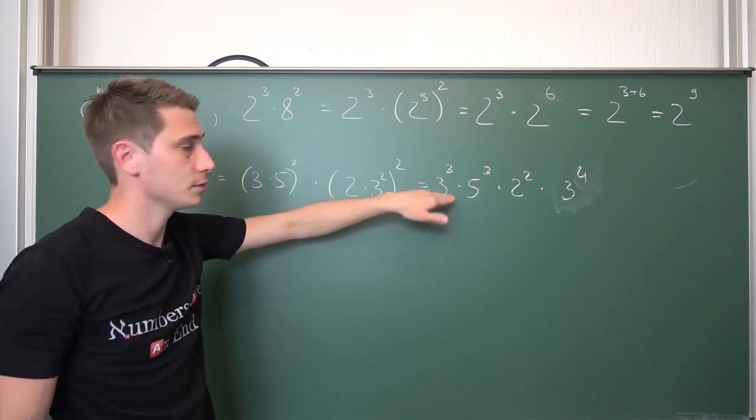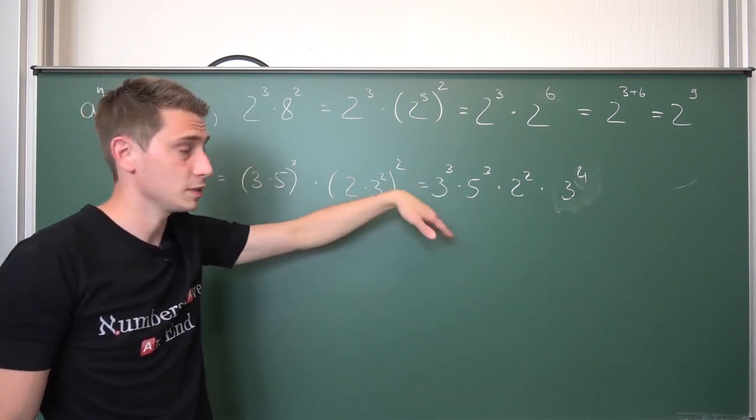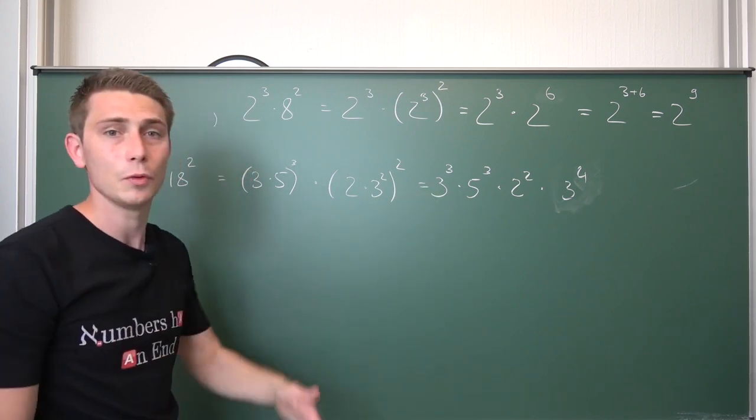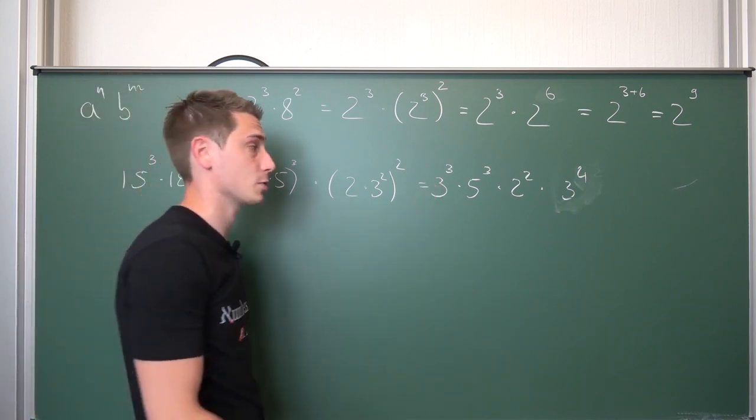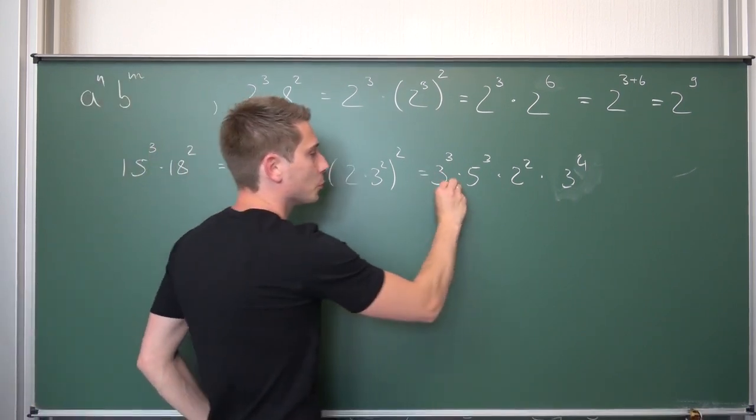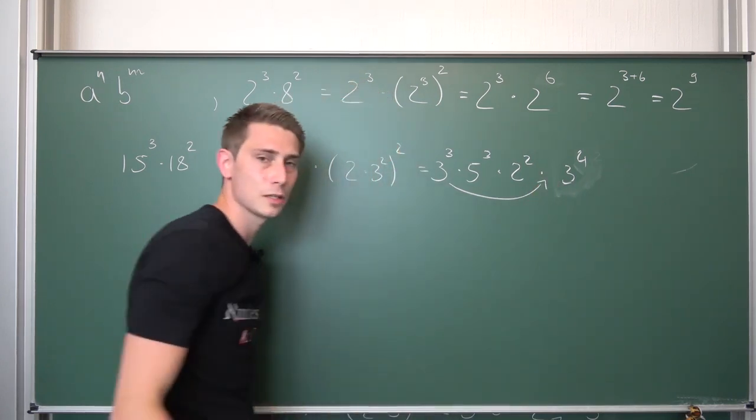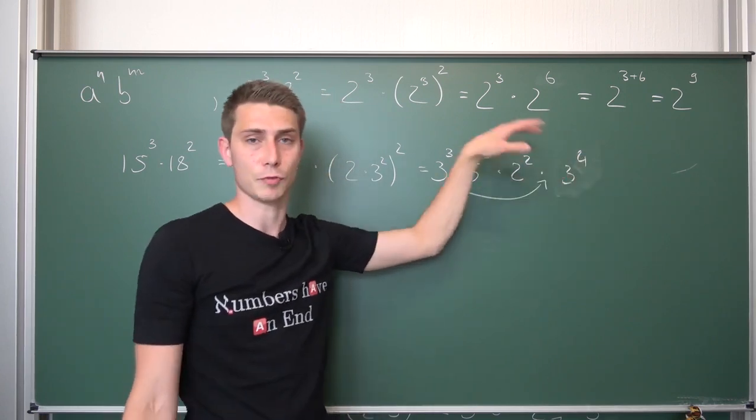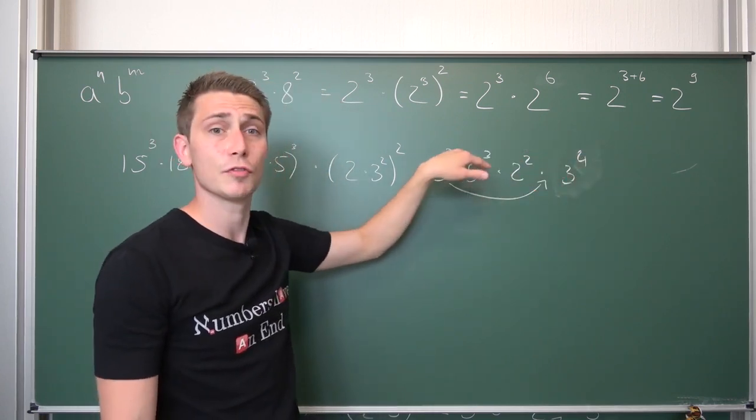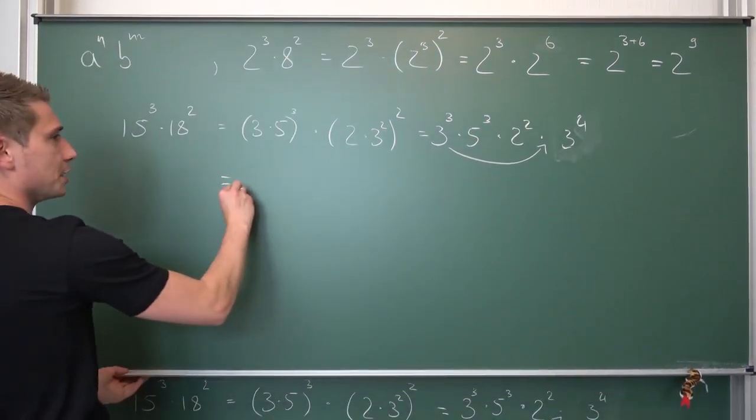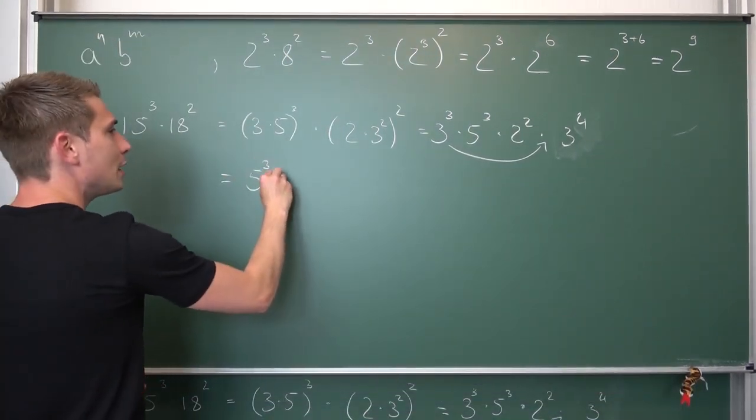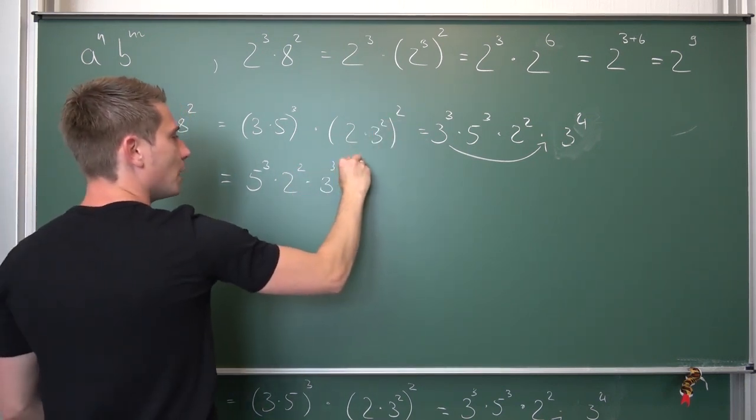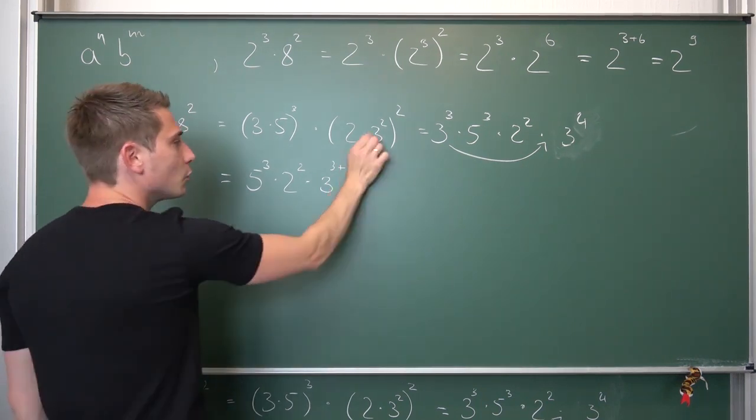Meaning, we can just interchange. It really doesn't matter how you operate. So, if you take 3 to the 3rd power times something or something times 3 to the 3rd power, it really doesn't change what you are doing. It just holds for the natural numbers, for example. So, we are going to bring the 3 cubed to the side. And then we have 3 cubed times 3 to the 4th power. Same base. Different exponent. Makes 3 to the 3 plus 4 power. Let us write it out. So, this is 5 to the 3rd power times 2 squared times 3 to the 3 plus 4 power. And 3 plus 4 makes 7.